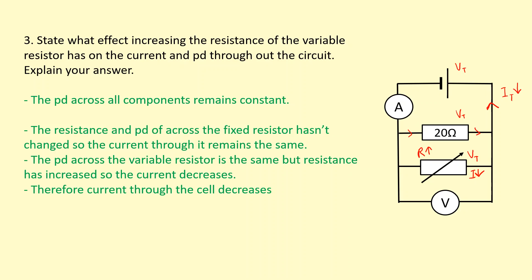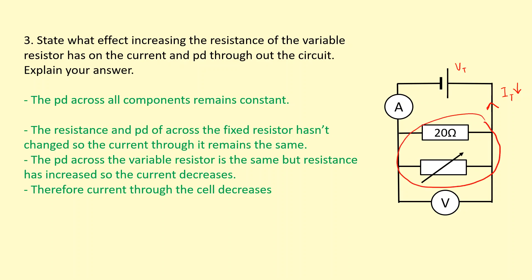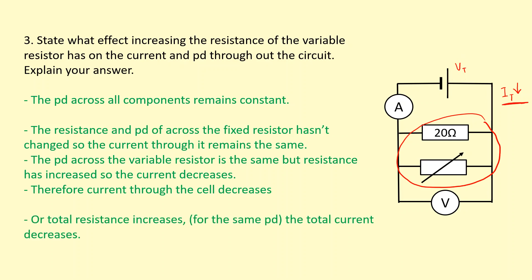So the current through the cell decreases. Another way of thinking about this: we've increased the resistance of one of the resistors, meaning this combination as a whole will have a higher total resistance. So if there's a higher total resistance for the same voltage, you're going to get a lower total current in the circuit. That's the other possible way of explaining it.